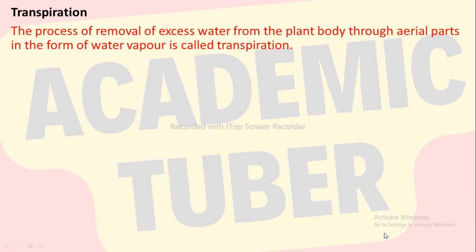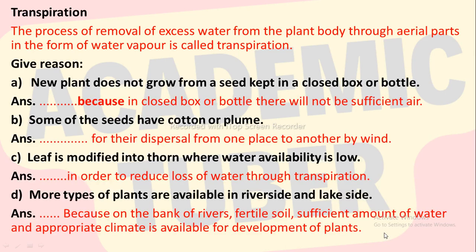Transpiration: the process of removal of excess water from the plant body through aerial parts in the form of water vapor is called transpiration. Some reasoning questions from this unit: new plants do not grow from a seed kept in a closed box or bottle because there will not be sufficient air. Some seeds have cotton or plume for their dispersal from one place to another by wind. Leaves are modified into thorns where water availability is low, in order to reduce loss of water through transpiration. More types of plants are available in riverside and lakeside because on the banks of rivers, fertile soil, sufficient amount of water and appropriate climate are available for development of plants.